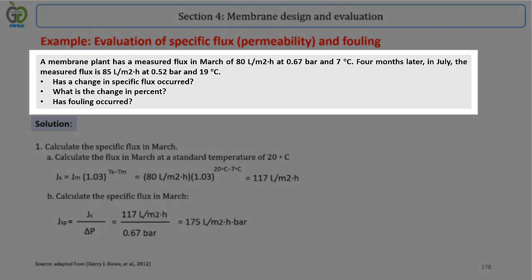In this example, a membrane plant has a measured flux in March of 80 liters per square meter in hour at 0.67 bar and 7 degrees Celsius.